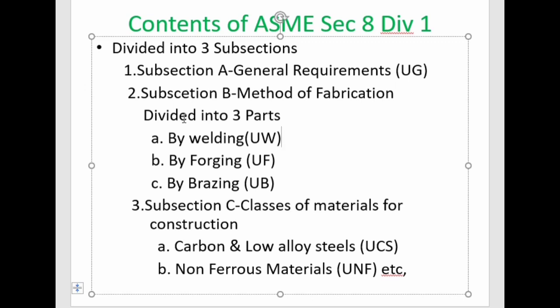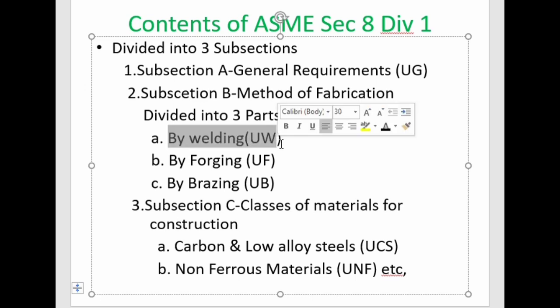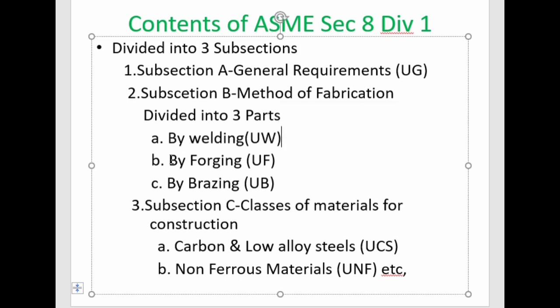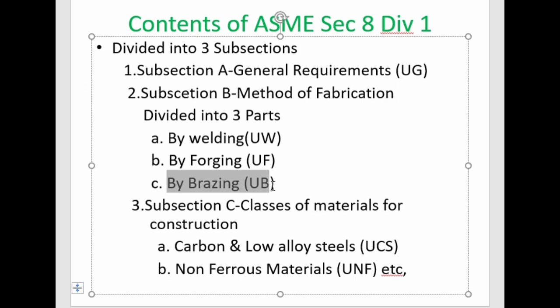The second subsection is Subsection B, which covers the method of fabrication of pressure vessels. It is divided into three parts: the first is by welding, denoted as UW; the second is by forging, denoted as UF; and the third is by brazing, denoted as UB.